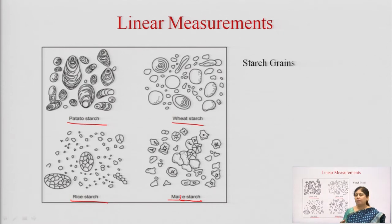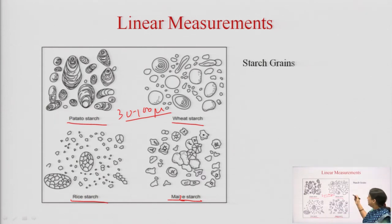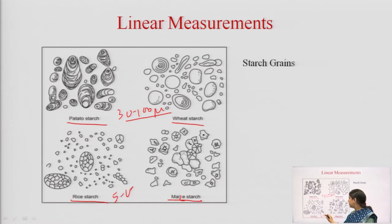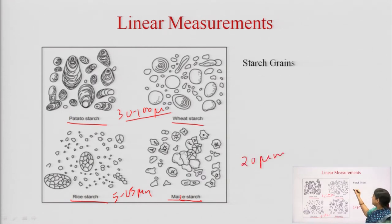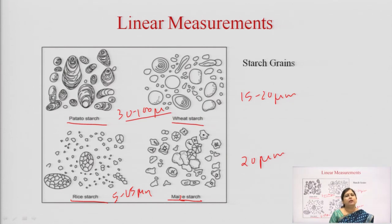For example, the largest starch grains are in potato starch — 30 to 100 micrometers. Rice starch is very small, about 5 to 15 micrometers, maize starch is about up to 20 micrometers, and wheat starch is also about 15 to 20 micrometers. Using this technique, we can identify which kind of starch is present in a given sample, helping us in identification.